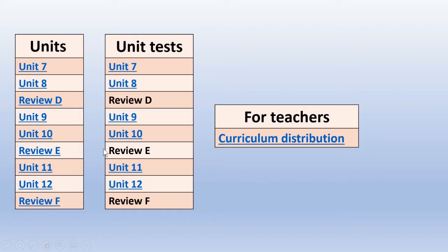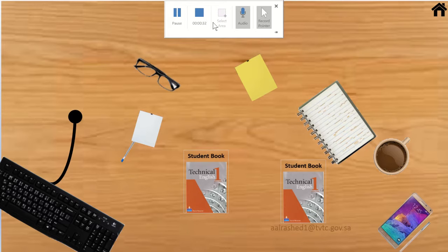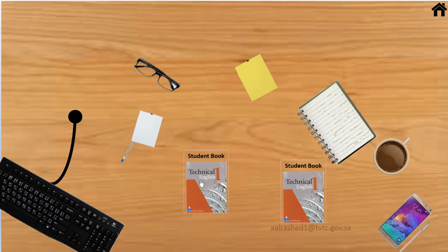Hello again, today we will start Unit 8. In the previous unit we talked about specification — a technical description of an item. We then talked about quantities and divided nouns into countable and uncountable nouns. Finally, we talked about the future and learned the appropriate structure using 'will'. Today we will start our first lesson of this unit.